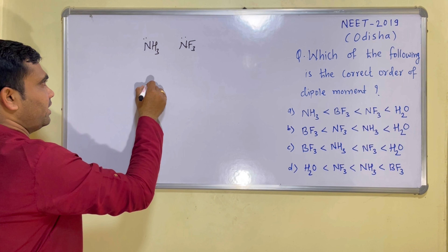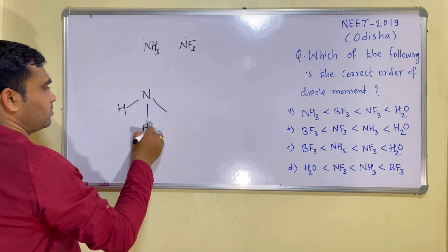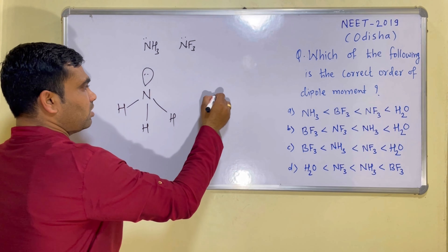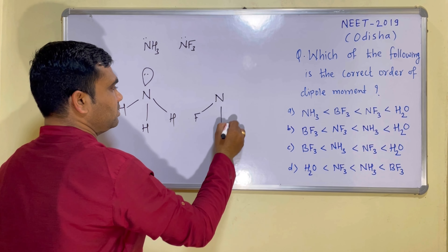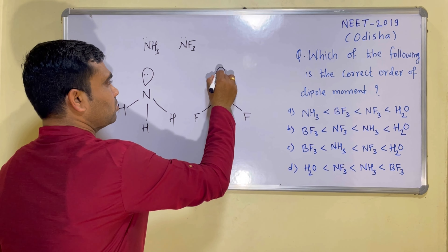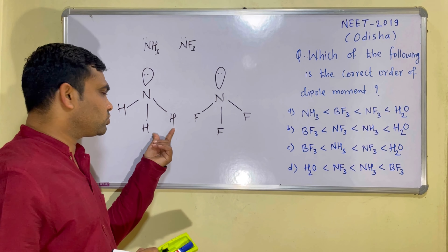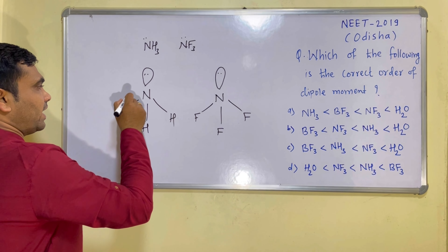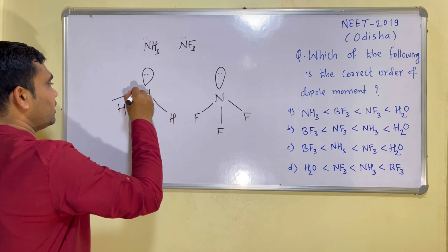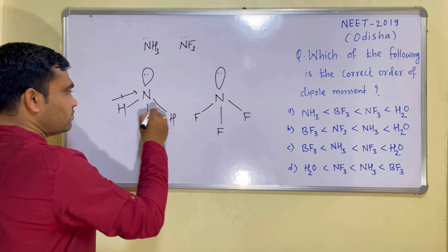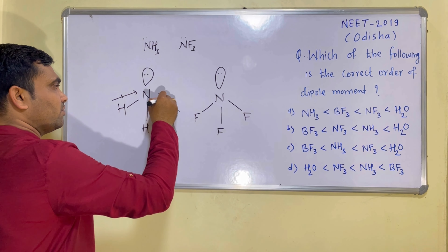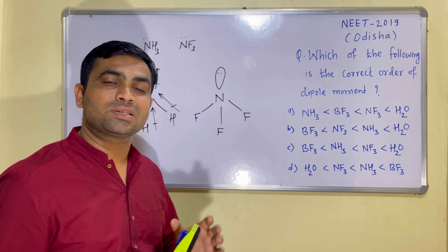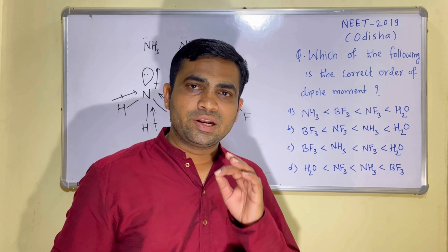Drawing the structures: NH3 has trigonal pyramidal shape with tetrahedral geometry. For NF3, a similar geometry is observed. In NH3, nitrogen is more electronegative than hydrogen, so the bond dipole moment vectors point from hydrogen towards nitrogen. The lone pair vector also points in the same direction as the bond vectors. Therefore, all vectors are pointing along the same axis and in the same direction, so the net dipole moment of NH3 is high.